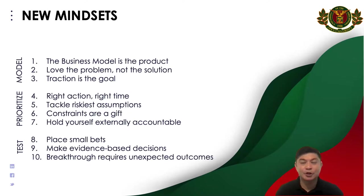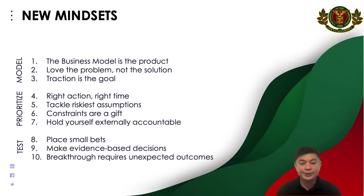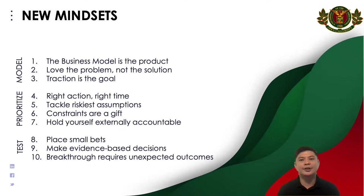Fifth mindset: tackle the riskiest assumption. The riskiest assumption in a business model is whether the product is really desired by your target market — do these customers have this specific need, and is that need solved by your product or service? You need to find that in a more data-driven way through experimentation. Constraints are a gift — they force entrepreneurs to extract creativity. When you have finite resources, you need to be creative in your operations and marketing to learn about customers and stay ahead of competition.